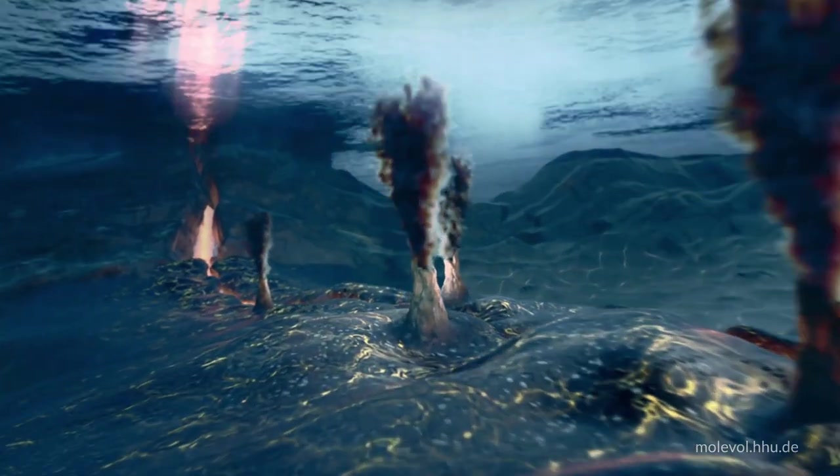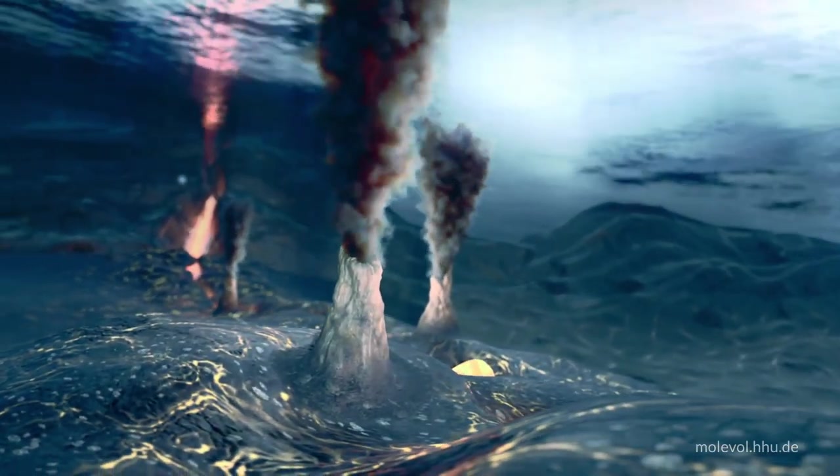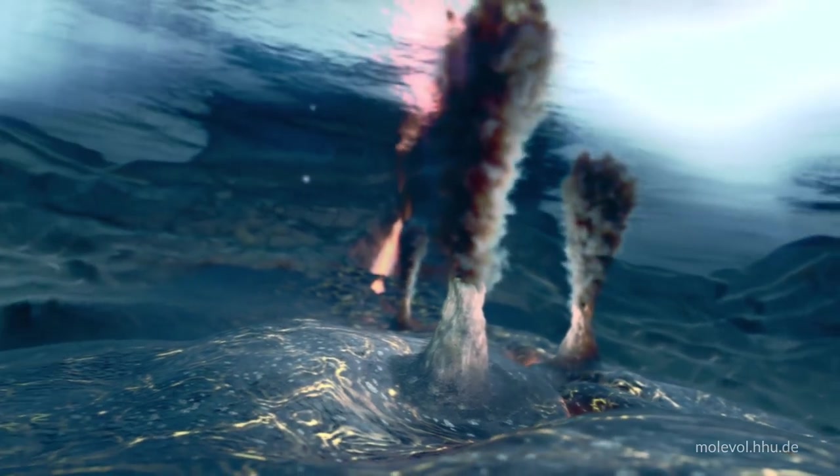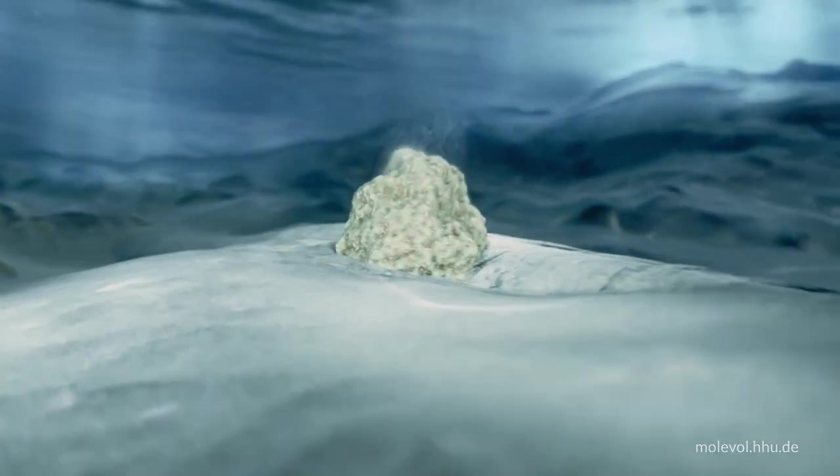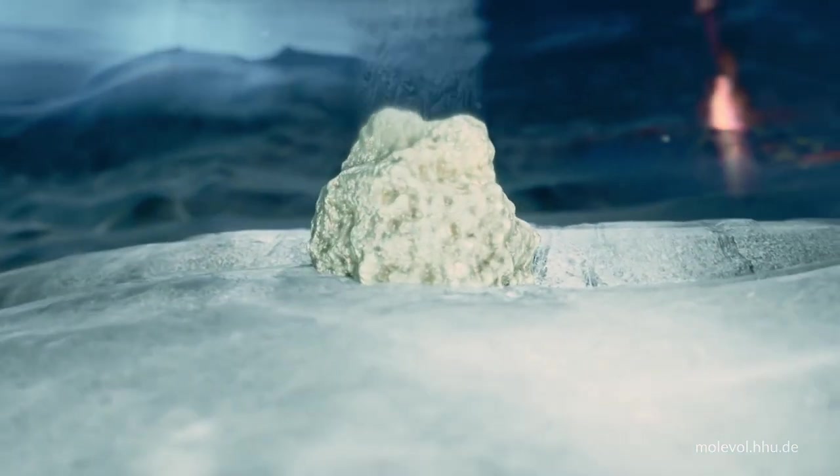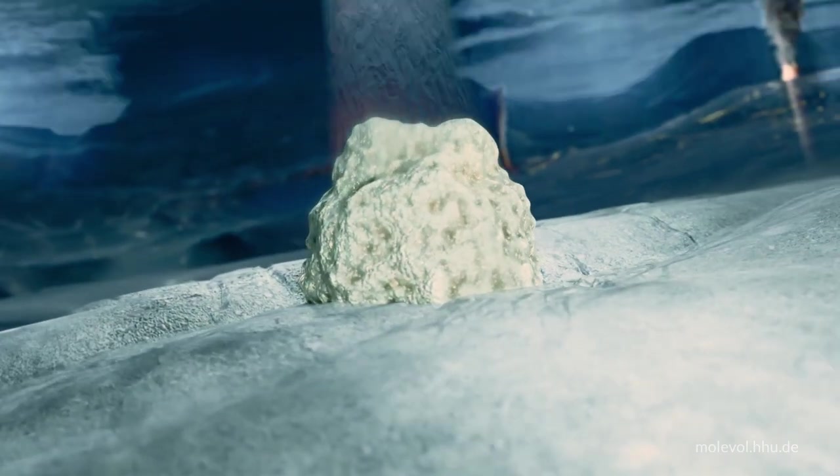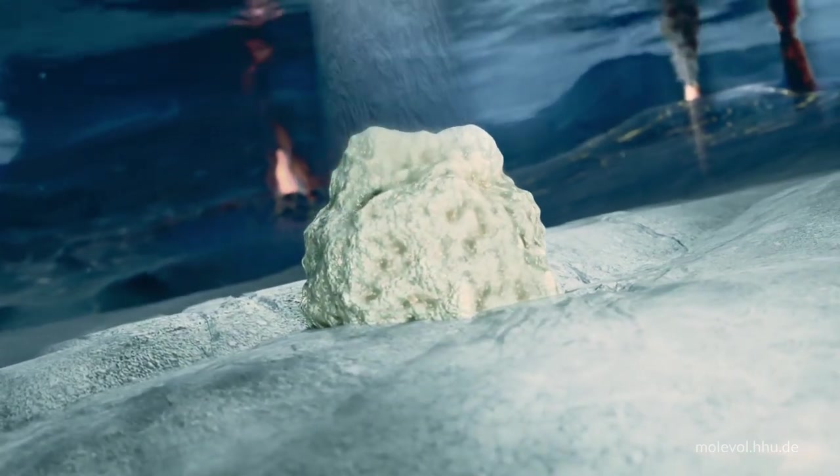Most people know about black smokers, the hydrothermal vents that emit 400-degree hot water and that sit on top of submarine spreading zones. But there are other kinds of submarine hydrothermal vents situated far away from spreading zones. These off-ridge vents are less well-known, but they are extremely relevant for life's origin because of their internal chemistry.